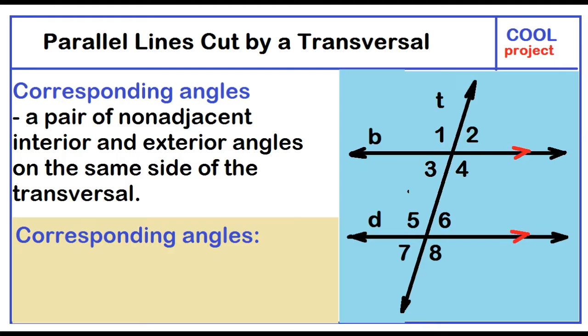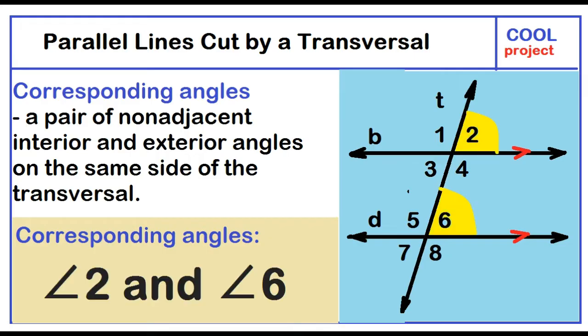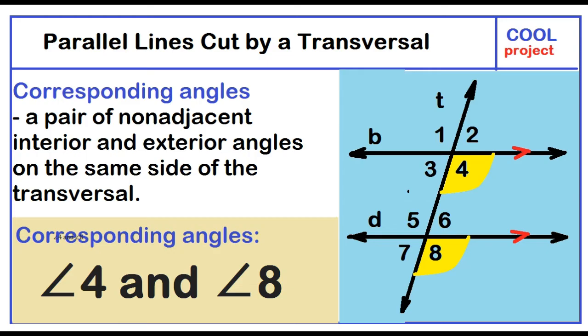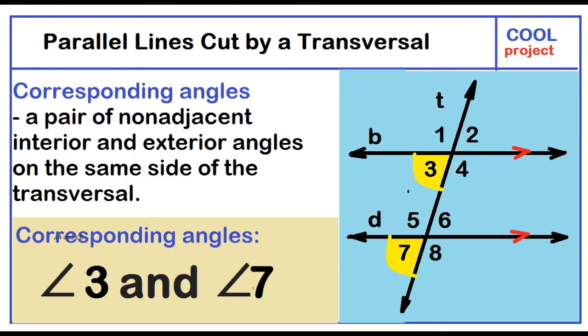Corresponding angles — a pair of non-adjacent interior and exterior angles on the same side of the transversal. Corresponding angles are: angle 2 and angle 6, angle 4 and angle 8, angle 1 and angle 5, angle 3 and angle 7.